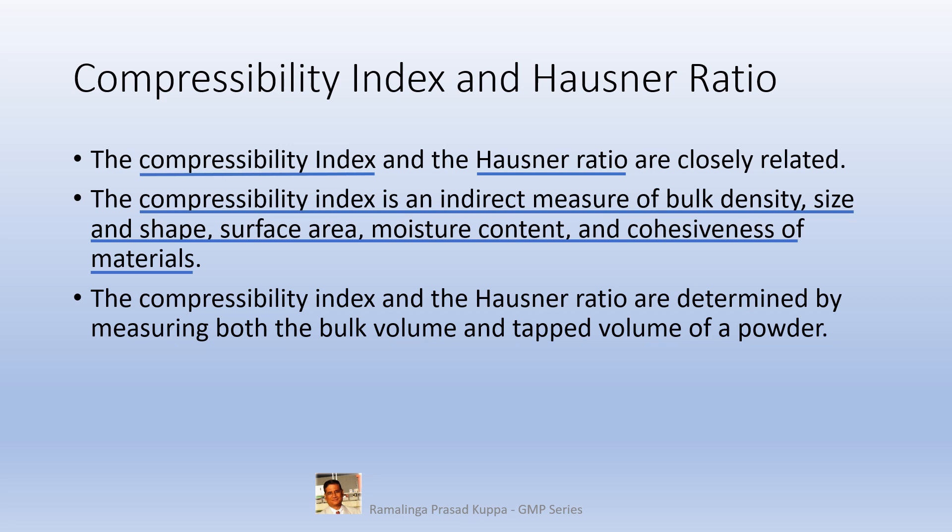The compressibility index and the Hausner ratio are determined by measuring both the bulk volume and tapped volume of a powder. This has to be understood that a known weight of sample is poured into the measuring cylinder and the volume is measured. Volume before tapping is called bulk volume or apparent volume. Some call it also as loose volume. Tapped volume is the reduced volume after certain tapping as prescribed in USP Chapter 616.